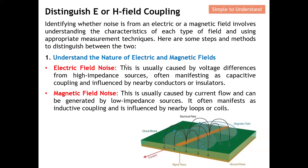First, we need to understand the nature of electric and magnetic fields. Electric field noise is typically caused by a voltage difference from a high-impedance source, and it can manifest as capacitive coupling influenced by nearby conductors or insulators. As shown in the PCB diagram, when there is a potential difference between a conductor and ground, an electric field is unintentionally generated — this is electric field noise.